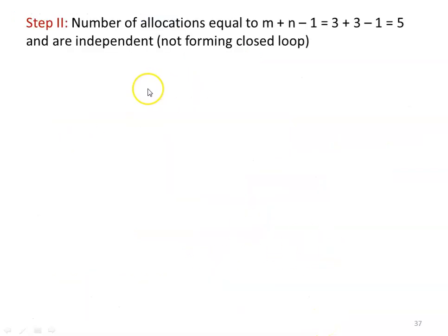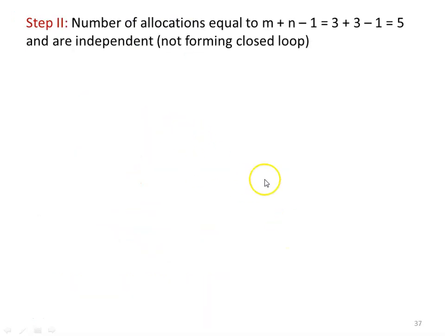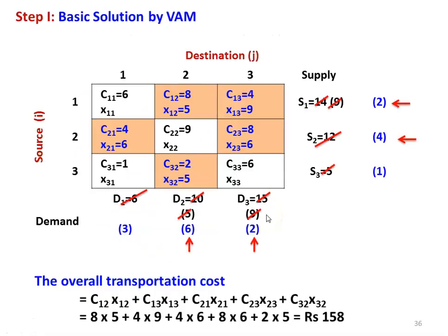Next, we check that the number of allocations equals m + n − 1 = 3 + 3 − 1 = 5. There are 5 allocations, and all 5 allocations are independent — meaning they do not form a closed loop. The allotments are independent.